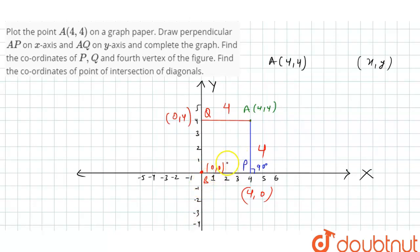Now we can see that this is a square. A, P, B, Q, A, P, B, Q is a square.